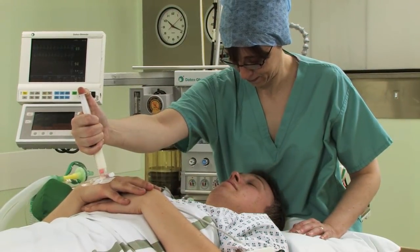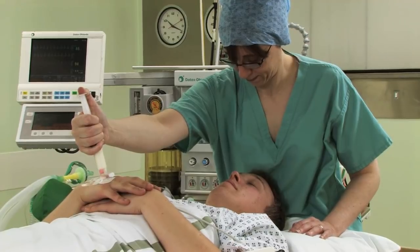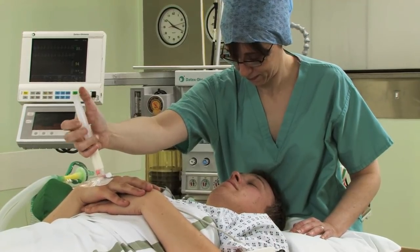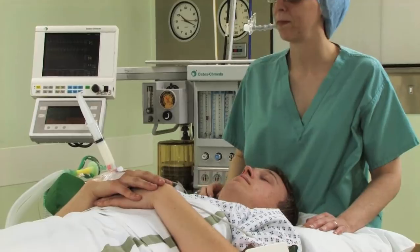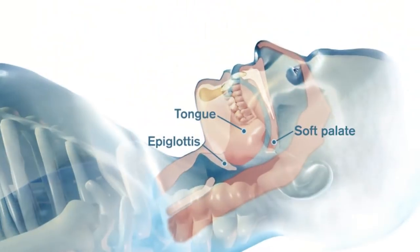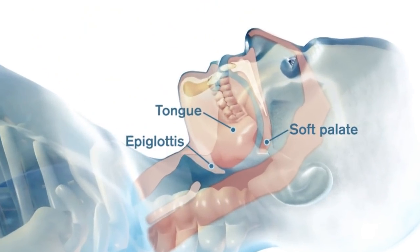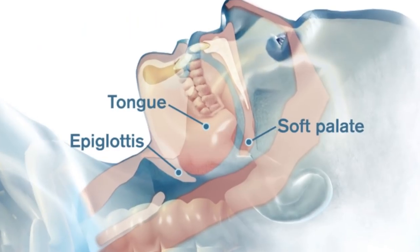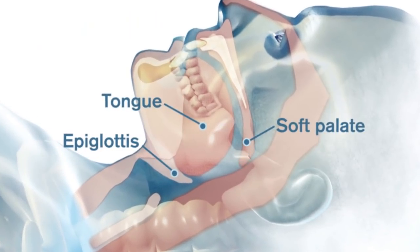In the spontaneously breathing anaesthetised patient, airway obstruction can be experienced. This is due to the anaesthetic induction agent causing the patient to experience a loss of muscular tone, causing the soft palate, tongue and epiglottis to move towards the back wall of the throat.